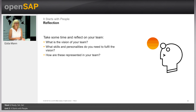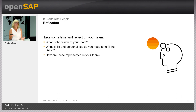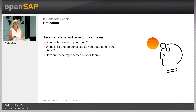Now let's take a reflection. Throughout the course we encourage you to reflect on how things are handled in your organization. Press the pause button and take a quick reflection on: What is the vision of your team right now? What skills and personalities do you need to fulfill that vision? How are they represented in your team, and are some missing? You're also welcome to check out Spectrum while reflecting.